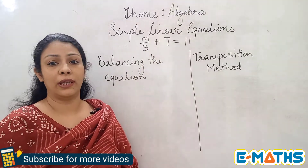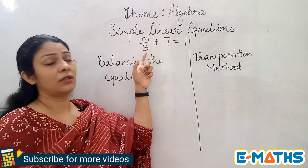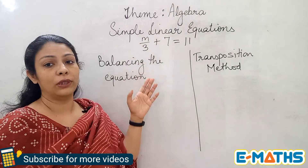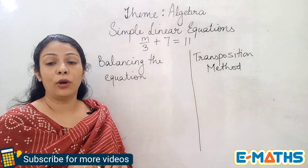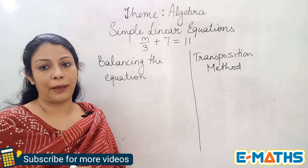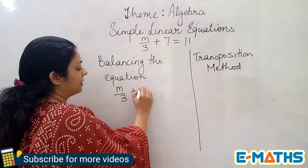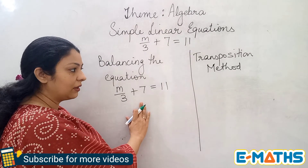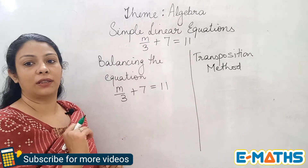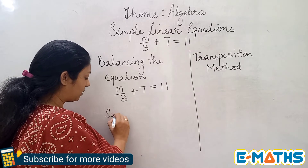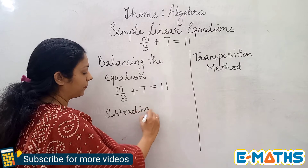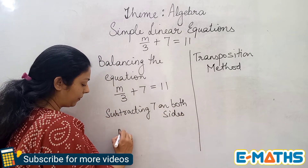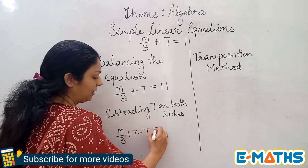I've written another question in a different form: m upon 3 plus 7 equals 11. Unlike the previous examples, the variable here has another term with it — it is divided by 3. To solve by the balancing the equation method, we go step by step: first remove the plus 7, then deal with the division by 3. Since it is plus 7, I subtract 7 on both sides.